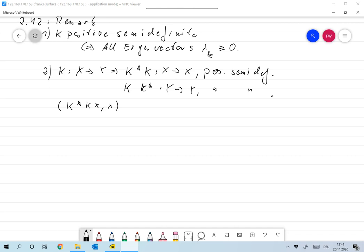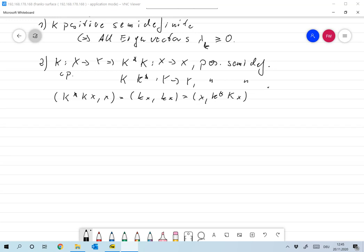...x and x for any x in X is the same as Kx scalar product with Kx. And, oh excuse me, K from X to Y of course, that was meant to be compact right. So that's the same as Kx and Kx, and that's the same as x and K* Kx. So first of all that means that K* K is self-adjoint.